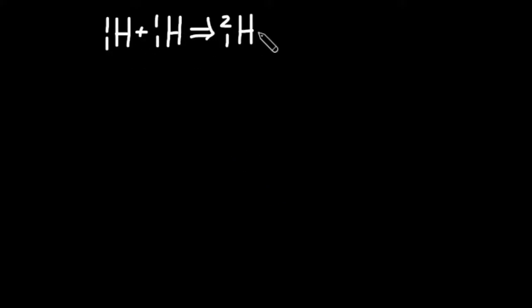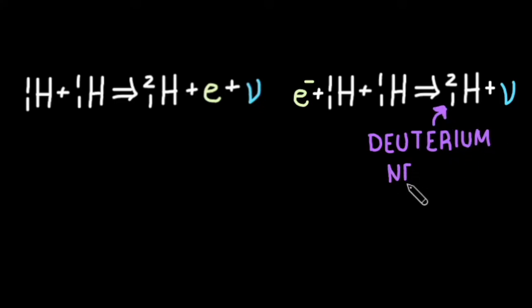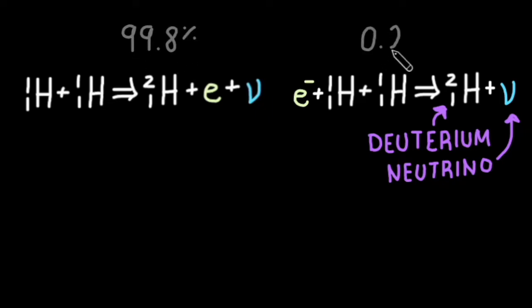It all starts when two protons come together to form deuterium, also known as heavy hydrogen. 99.8% of the time, a positron — which is short for a positive electron — and a neutrino will also be ejected in this process. Every once in a while, an electron will enter as a reactant with the two protons, yielding only deuterium and the neutrino as end products. This happens less than 1% of the time, so the main idea is that our reaction starts with two protons.